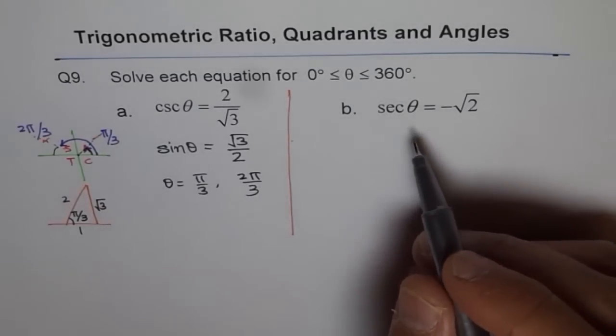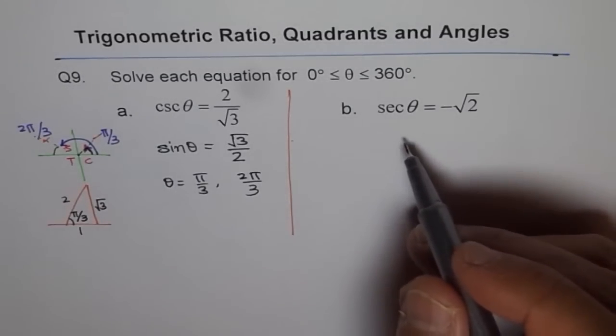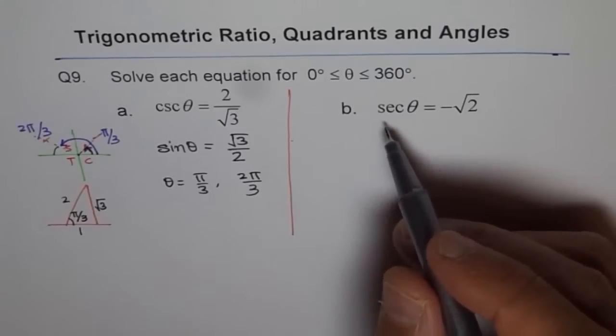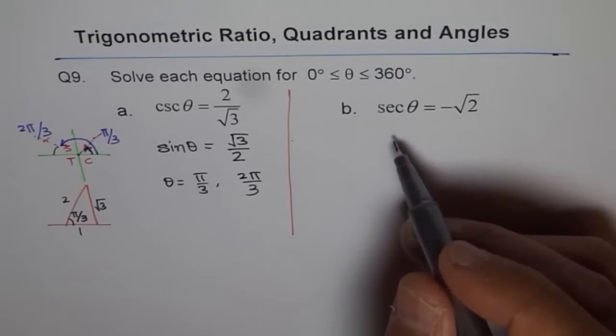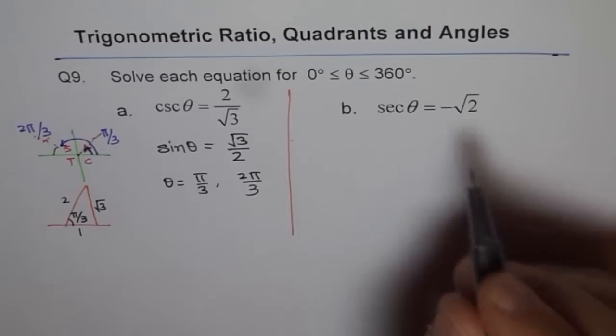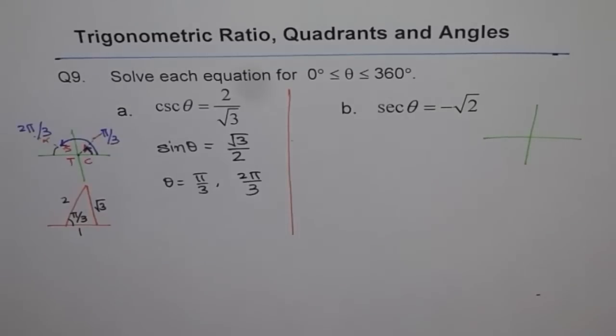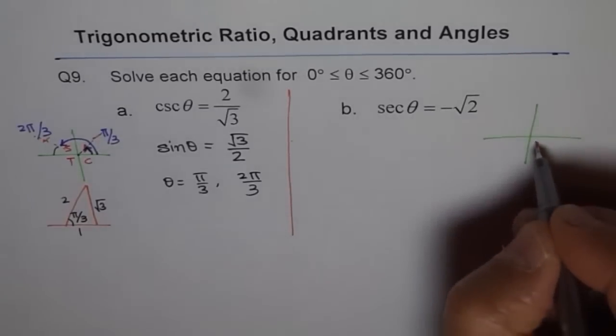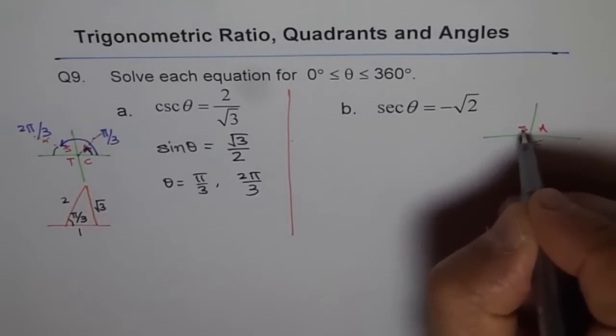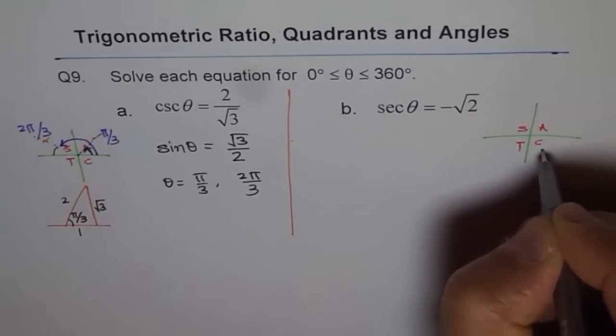Secant theta, it is not necessary to write it in cos terms. You can use secant as reciprocal of cosine. Well, secant theta is negative, that means what? That means as per the CAST rule, cos is positive here and here.